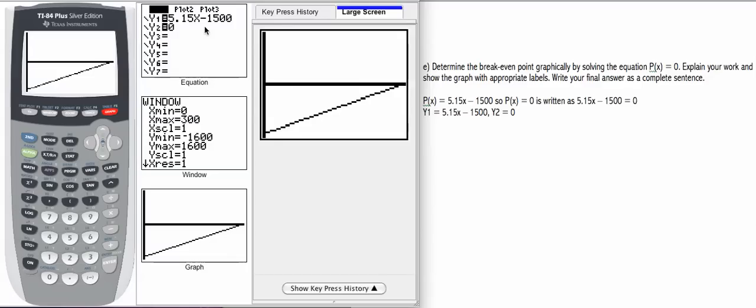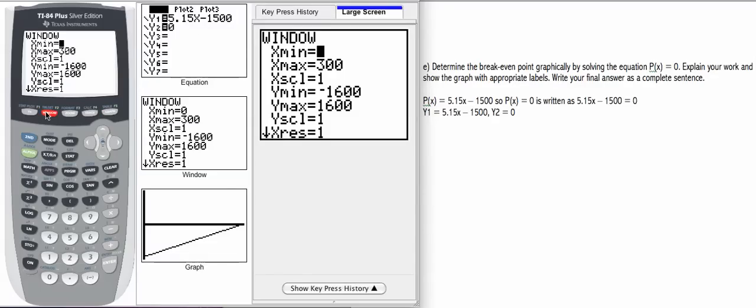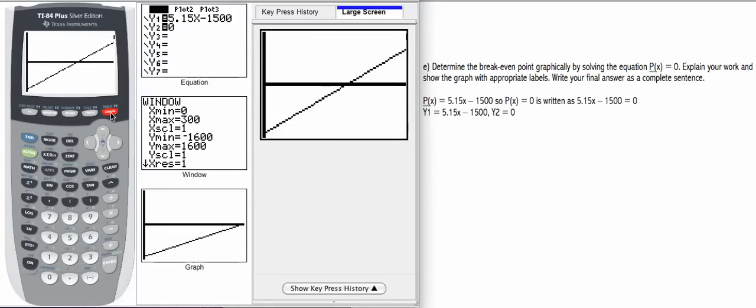After this point, our profit would be positive, and we would start to make money. In fact, if we change our window a little bit, let's expand our value for input to, say, 500. That should give us a better picture and graph.